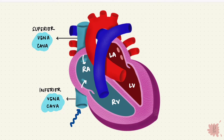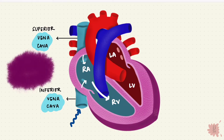The superior and inferior vena cava drain into the right atrium. Blood from the right atrium goes through the tricuspid valve and then into the right ventricle. Everything that happened up to now was systemic circulation — blood passing through the body's systems.